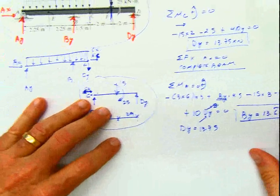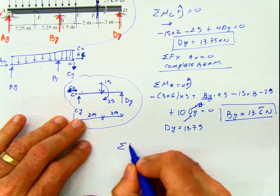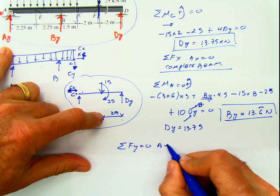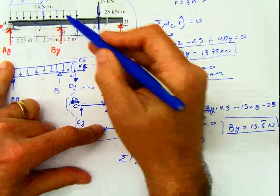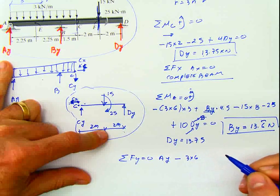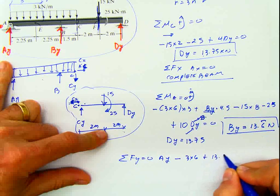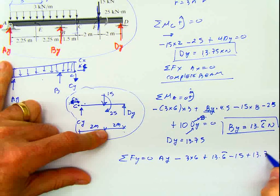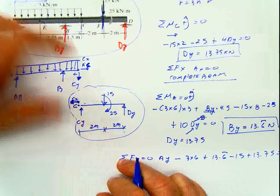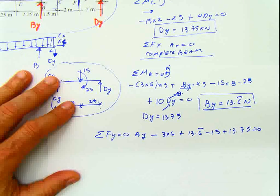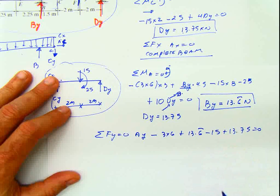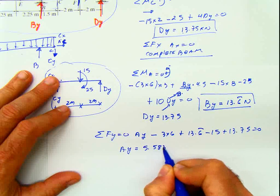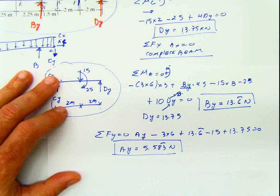The only missing part is summation of forces in y for the whole beam equals 0: Ay minus the vertical force from the triangle, which is 3 times 6 equals 18, plus By of 13.6, minus 15, plus Dy of 13.75 equals 0. From there, Ay equals 5.583 kilonewtons.